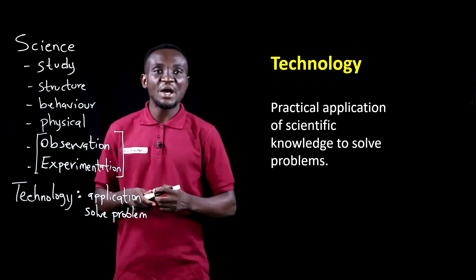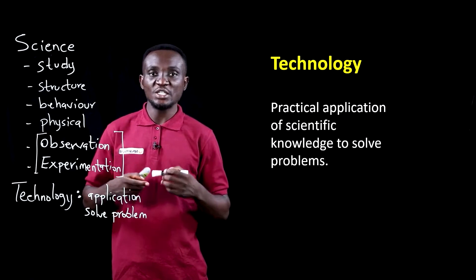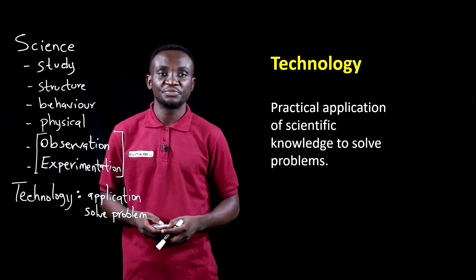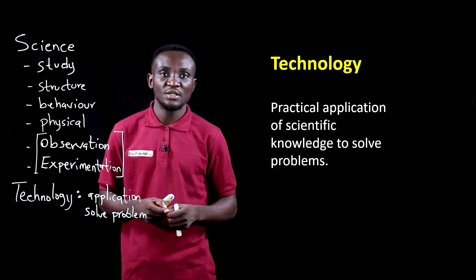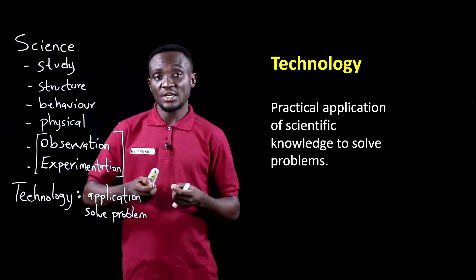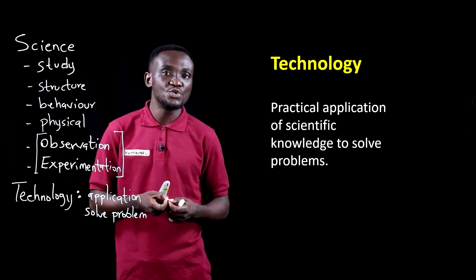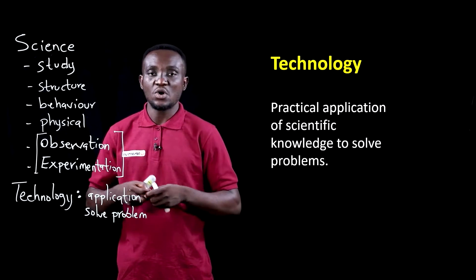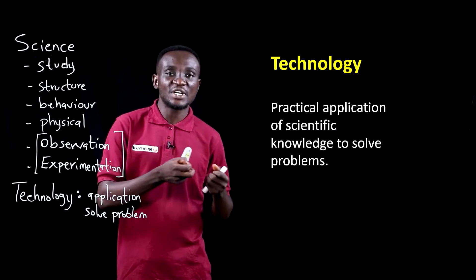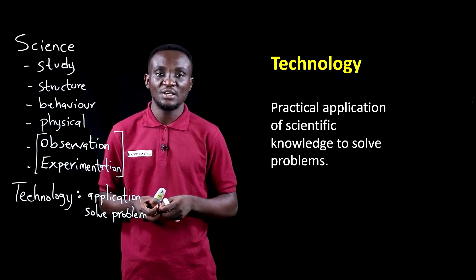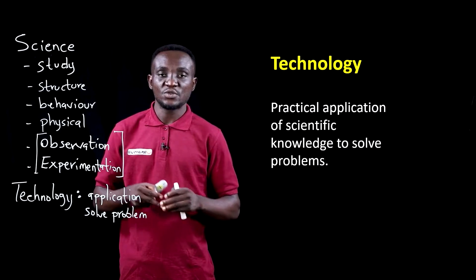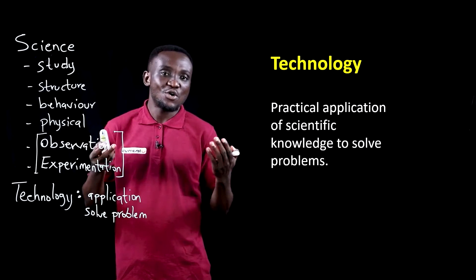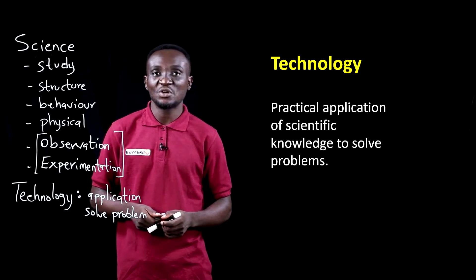Technology aims to solve problems, manipulate the human environment, or change the physical conditions around people. Whereas science has to do with the know-why, technology deals with the know-how. Science is interested in why things occur the way they do, but technology looks at how things are done — how are cars made, how do we develop vaccines, how do we develop drugs to combat diseases? Science asks why pathogens cause diseases or why rainfall occurs.